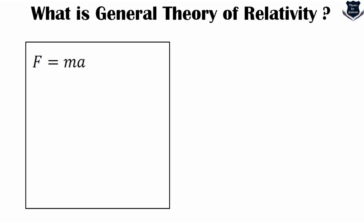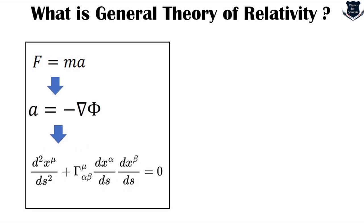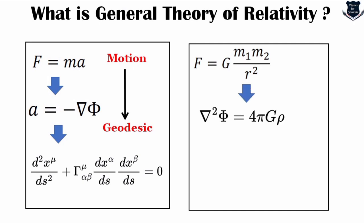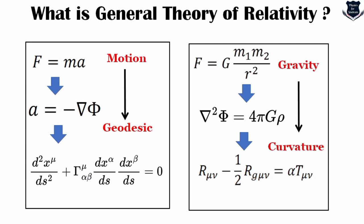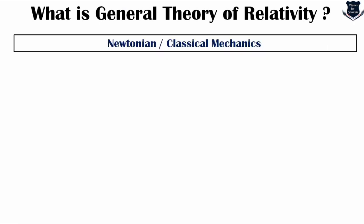Newton's second law F = ma gets extended into the geodesic equation: classical motion is extended to geodesic motion. The universal law of gravitation, which takes care of gravitational potential, is further defined in Einstein's field equations — meaning gravity is extended as a curvature. The equation of motion generalizes to a geodesic and the equation of gravity is expressed in a tensorial format in Einstein's field equations, which describe the curvature of spacetime.